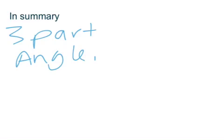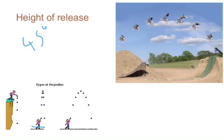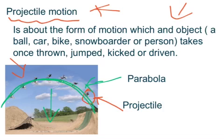So in summary, three parts to projectile motion. There is the angle of release, speed of release, and height of release. All three of these components work together to give us projectile motion. The arc that you can see in the very first example over here is the parabola, and the ball, object, or person is the projectile.